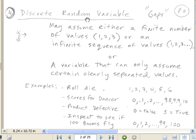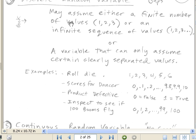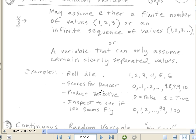Let's go to the next page. Discrete random variable. Here are some examples. Roll a die, we can get 1, 2, 3, 4, 5, or 6. Scores for a dancer, we could get 0, 0.1, 0.2, all the way up to 9.8, 9.9, 10. Product defective—false, meaning it's not defective, is 0, or true would be 1. So there's our numbers associated with it.